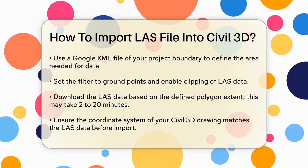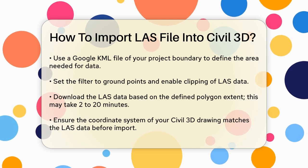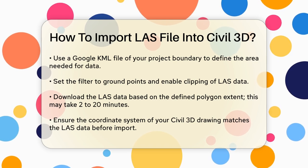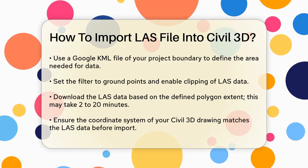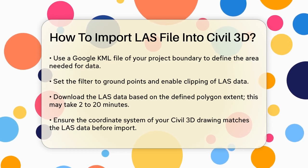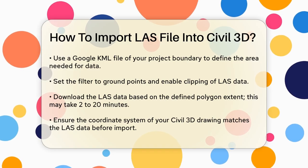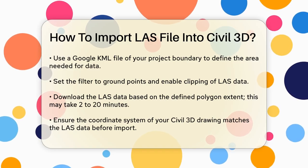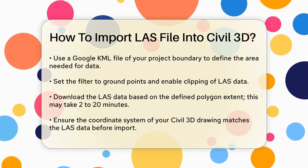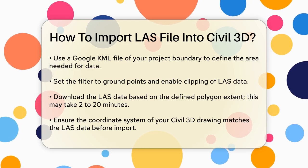Use the Google KML file of your project boundary to define the area you need. Set the filter to ground points and enable clipping of LAS data. Download the LAS data based on the loaded polygon extent. This can take anywhere from 2 to 20 minutes, depending on the file size and your connection.